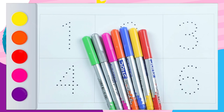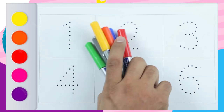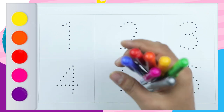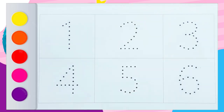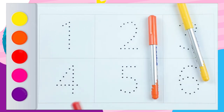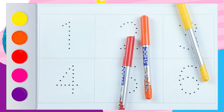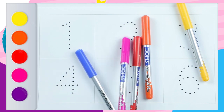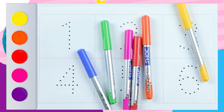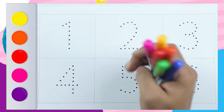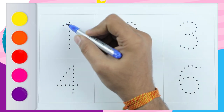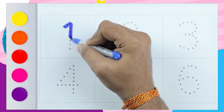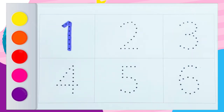Hello friends, today we learn numbers with colors. So many colors — we have yellow color, orange color, red color, blue color, pink color, green color. So let's start numbers. How to write number one with blue color — number one.